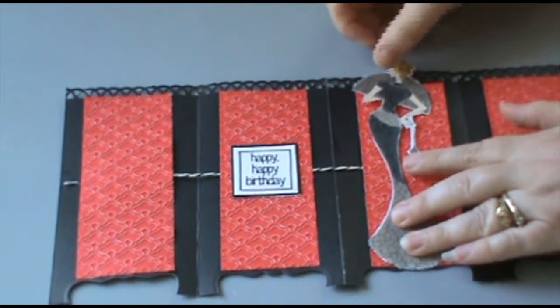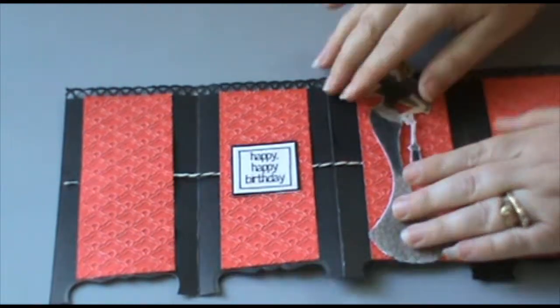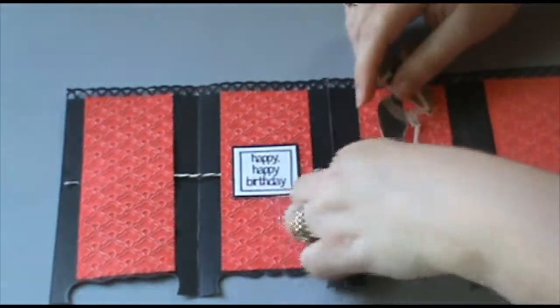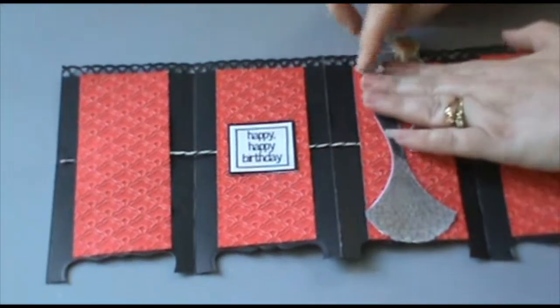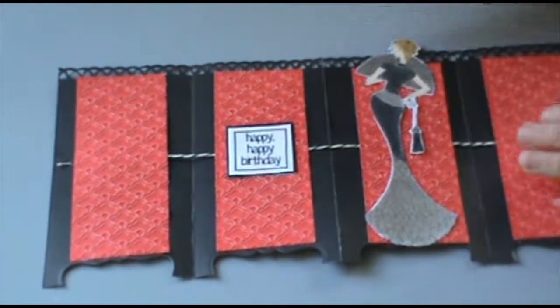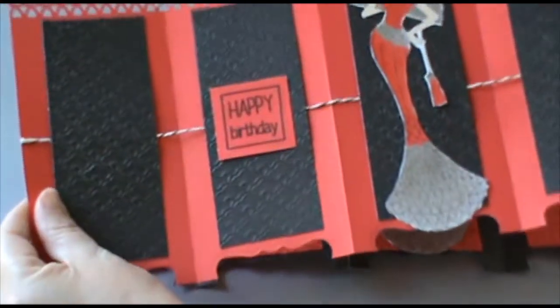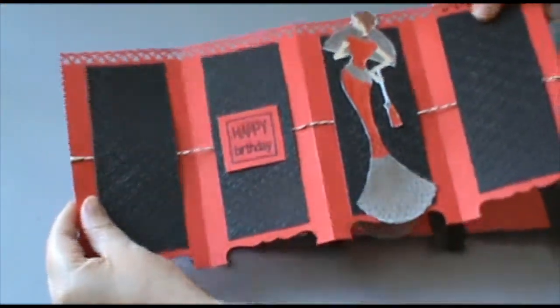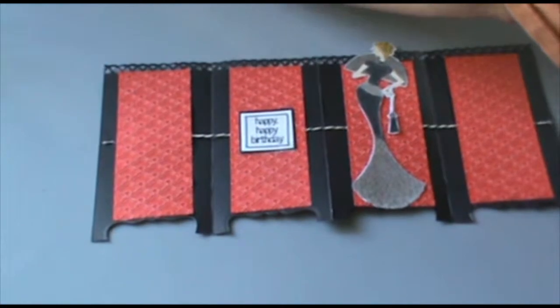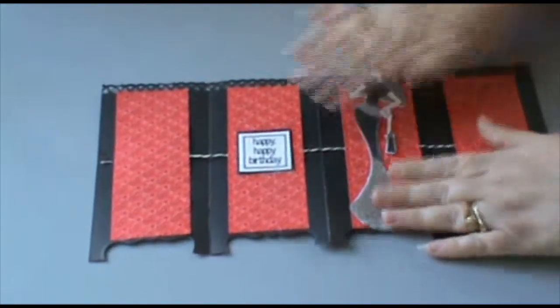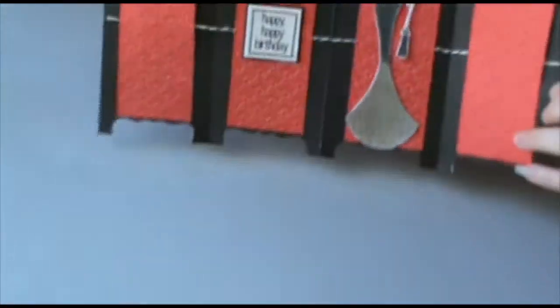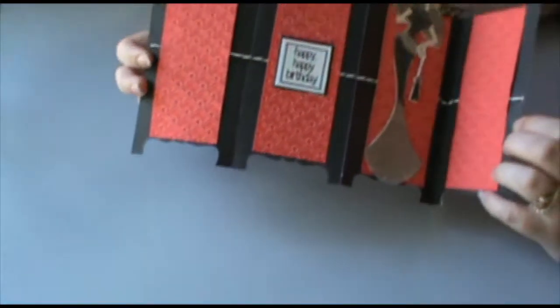She might go up above the card a little bit, but that's okay. That just brings a little interest to the top of the card there. Or you can make it so she's peeking through the top here like I did on this one. She's kind of peeking through there, you see. And this then will finish your card, and you will have a beautiful screen or partition card.